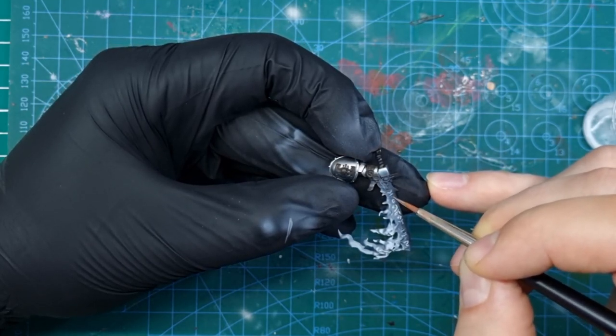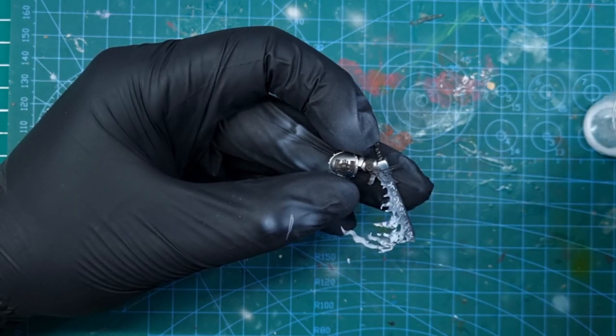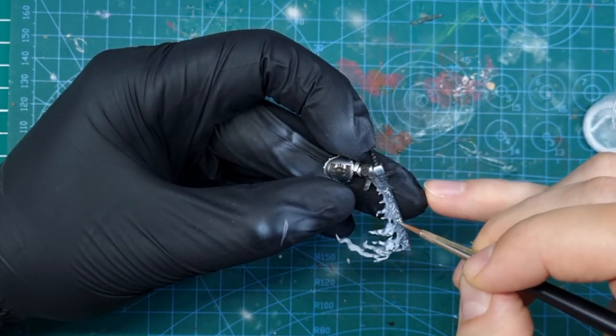You don't have to be too careful here. The point is to give the runes a bright white undercoat. It will help them shine later.